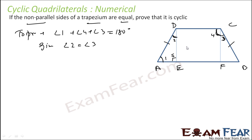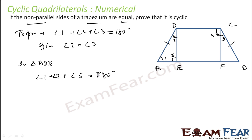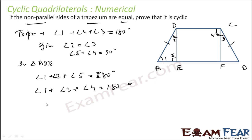Now, in triangle ADE, angle 1 plus angle 2 plus angle 5 equals 180 degrees by the angle sum property. So instead of angle 2 I can write angle 3, and instead of angle 5 I can write angle 4, because angles 5 and 4 are the same. And that is what we have to prove.